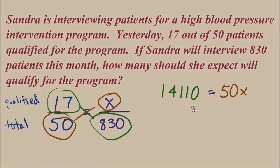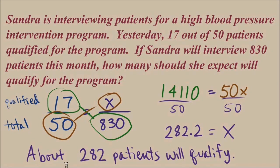14,110 equals 50x. We've turned this proportion into an equation that has no fractions and now we'll finish solving. Get this x by itself, this linear equation. We'll divide both sides by 50. The 50s will cancel. We're left with x equals 282.2. So we could say that Sandra should expect about 282 patients will qualify.